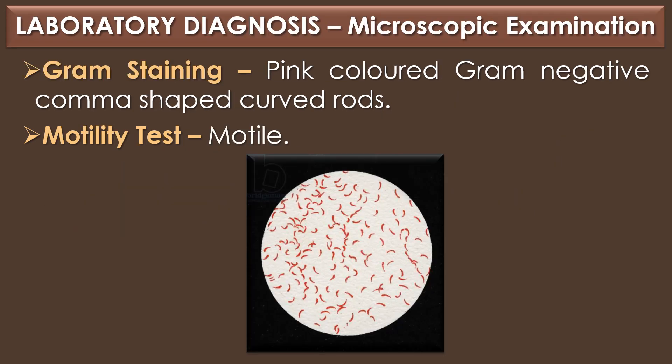Laboratory diagnosis of Vibrio cholerae: The first diagnostic method is microscopic examination. Under gram staining, Vibrio cholerae is observed as pink-colored, gram-negative, comma-shaped curved rods. In the motility test, Vibrio cholerae cells are highly motile.